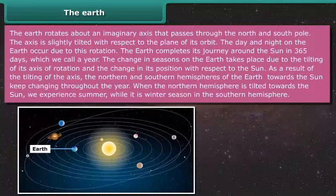The earth rotates about an imaginary axis that passes through the north and south pole. The axis is slightly tilted with respect to the plane of its orbit.